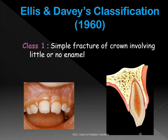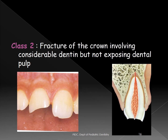Class I is a minimal enamel fracture — pictorially, the fracture involves only the enamel or very little enamel.